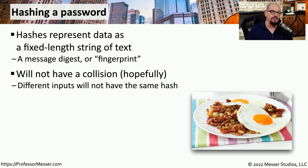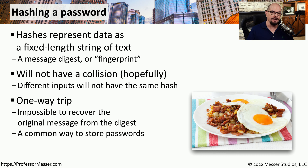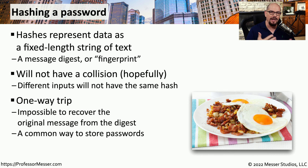The goal is to create a hashing function that would be very difficult to have exactly the same fingerprint or hash between two different inputs. We refer to this duplication as a collision, and if we find that a hashing function has a number of these collisions, then we may decide to use a different type of hashing function. Another important characteristic of a hash is that once you create the hash, there's no way to undo that process to get back to the original message. This is perfect for passwords because we could hash the password, but there would be no way to undo the hash to derive what the original password happened to be.